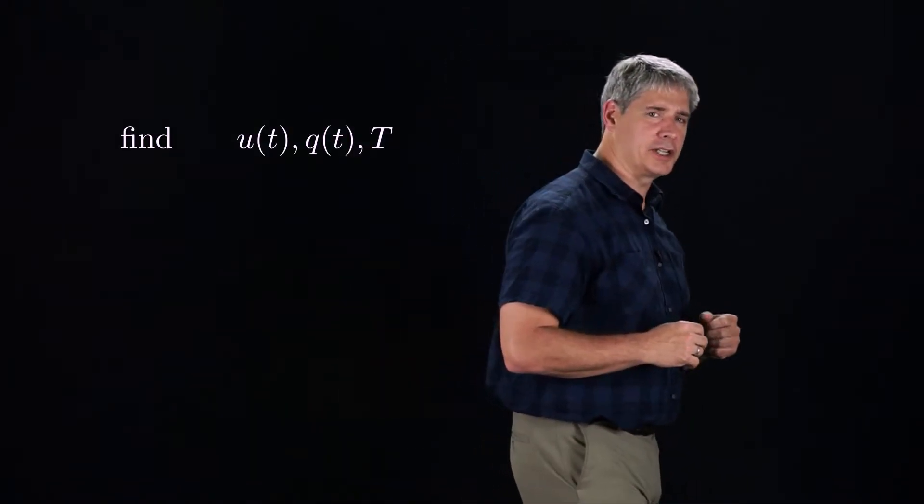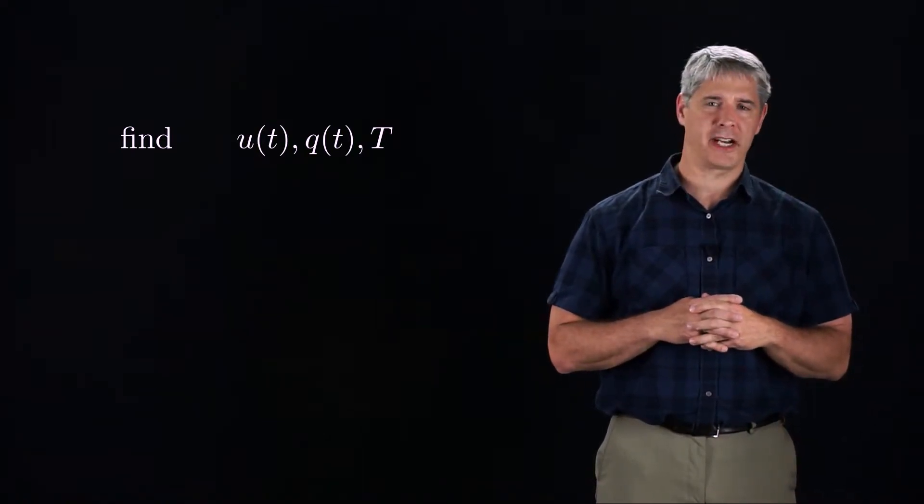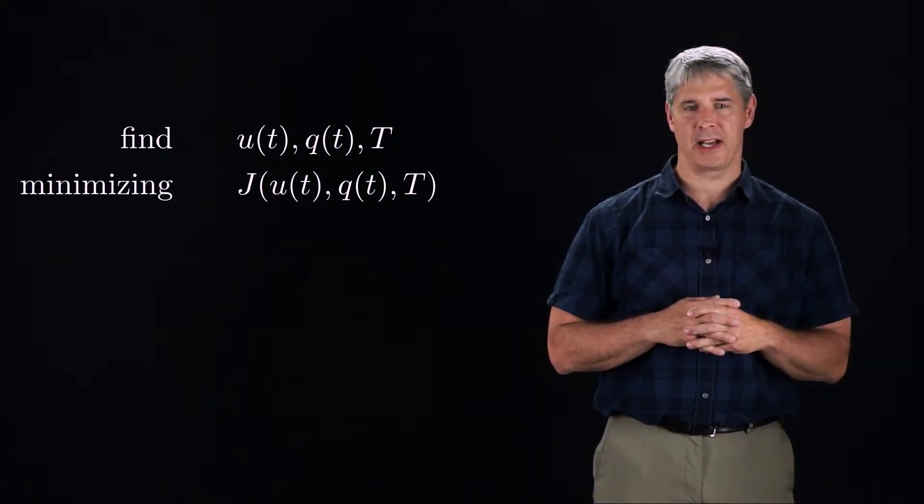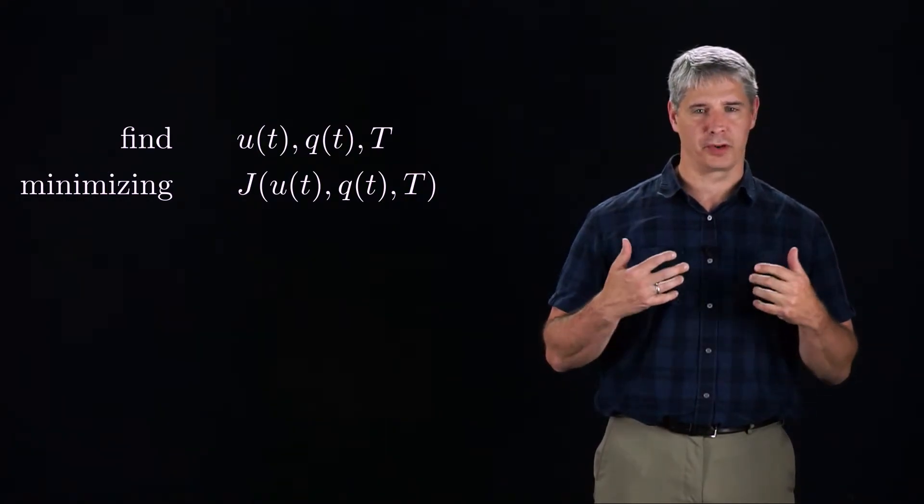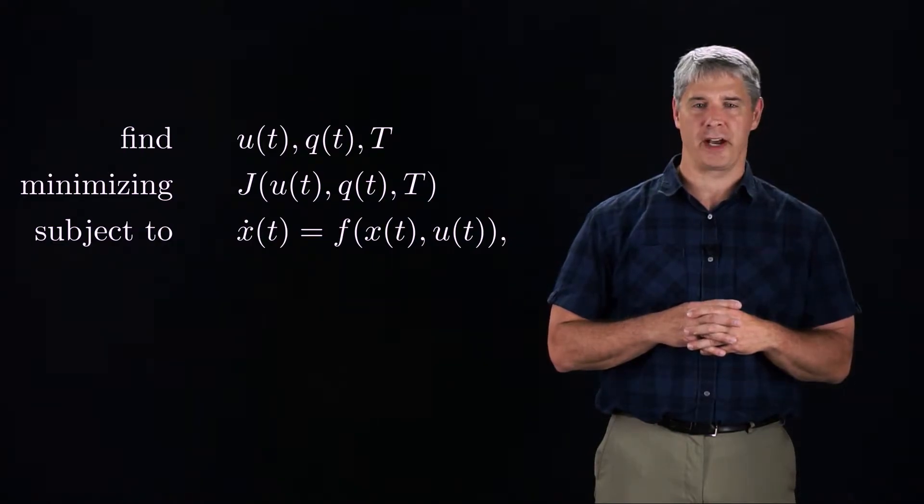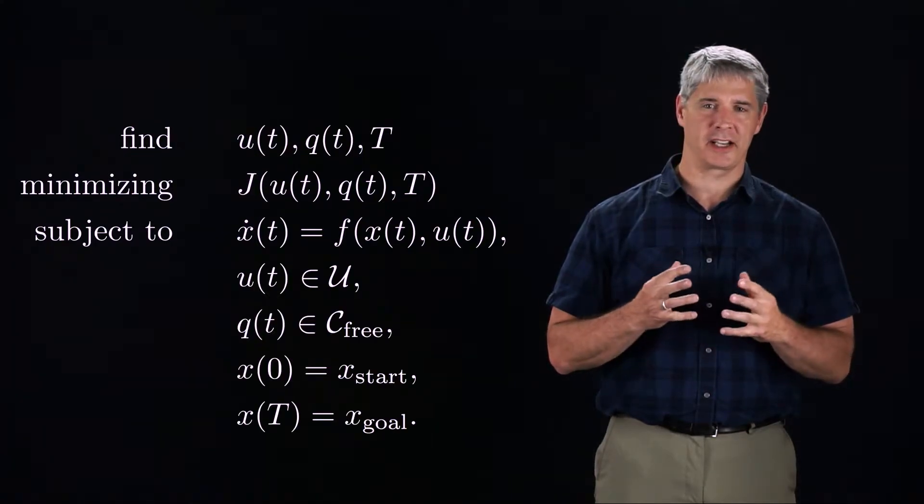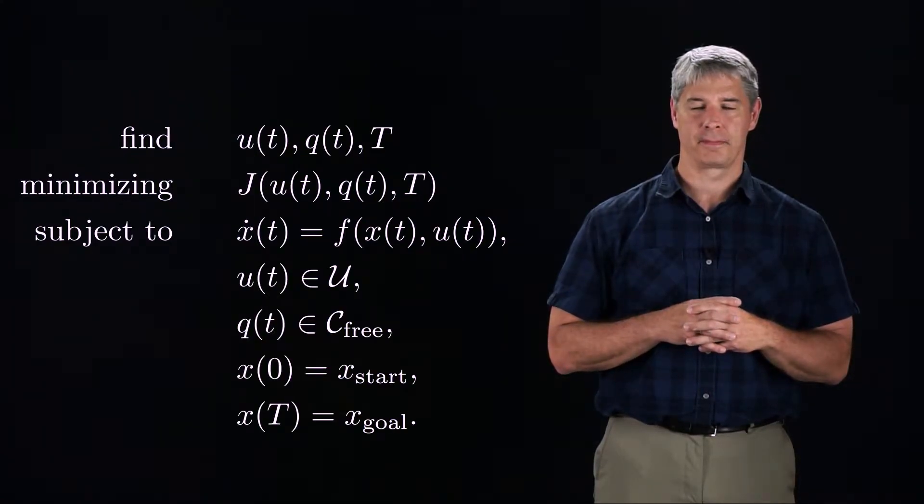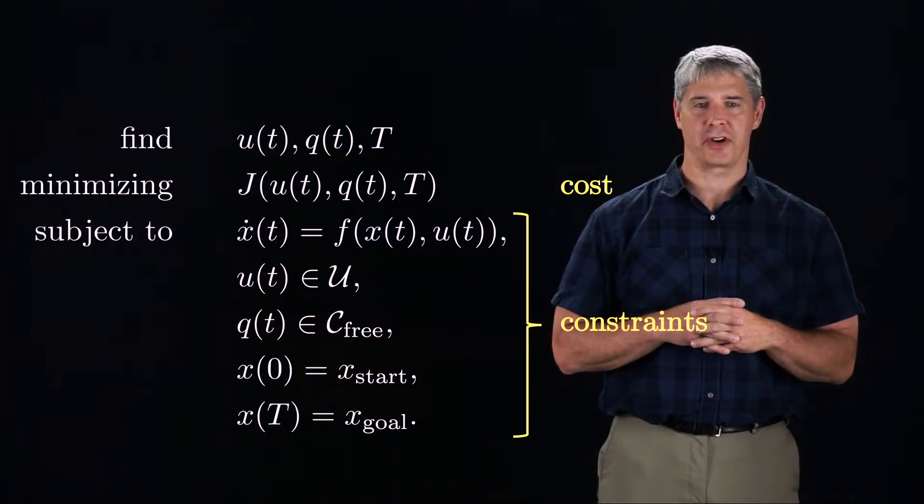The goal is to design a control history u, a trajectory q, and a trajectory duration capital T, minimizing some cost functional J, such as the total energy consumed or the duration of the motion, such that the dynamic equations are satisfied at all times, the controls are feasible, the motion is collision-free, and the trajectory takes the start state to the goal state. We refer to J as the cost, and the last five lines are the constraints.